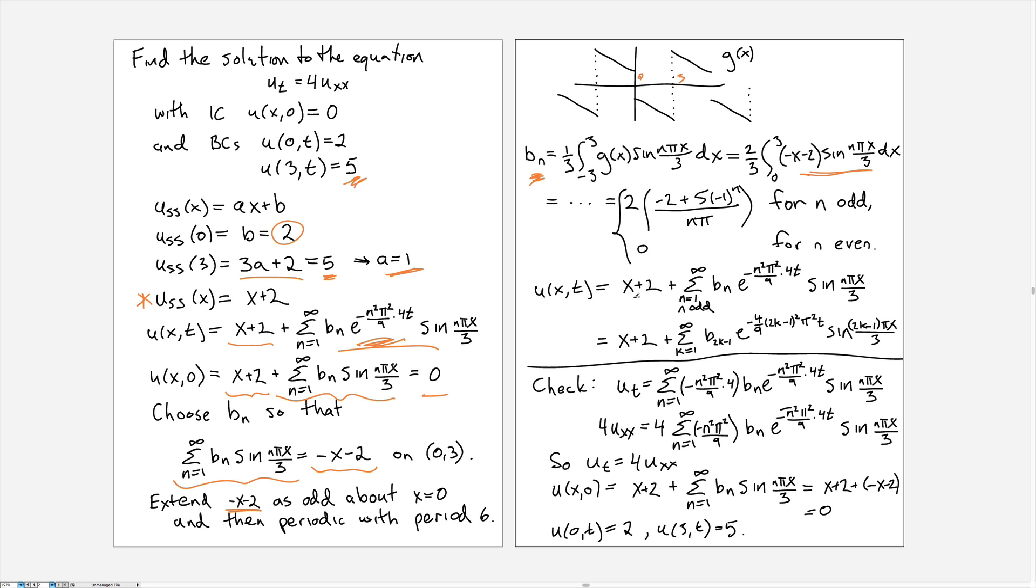And in the end we can write down the overall solution as x + 2 plus, now this is an awkward notation here, the sum from n = 1 to infinity but only odd values of n, of b_n e^(-n²π²/9t) sin(nπx/3).